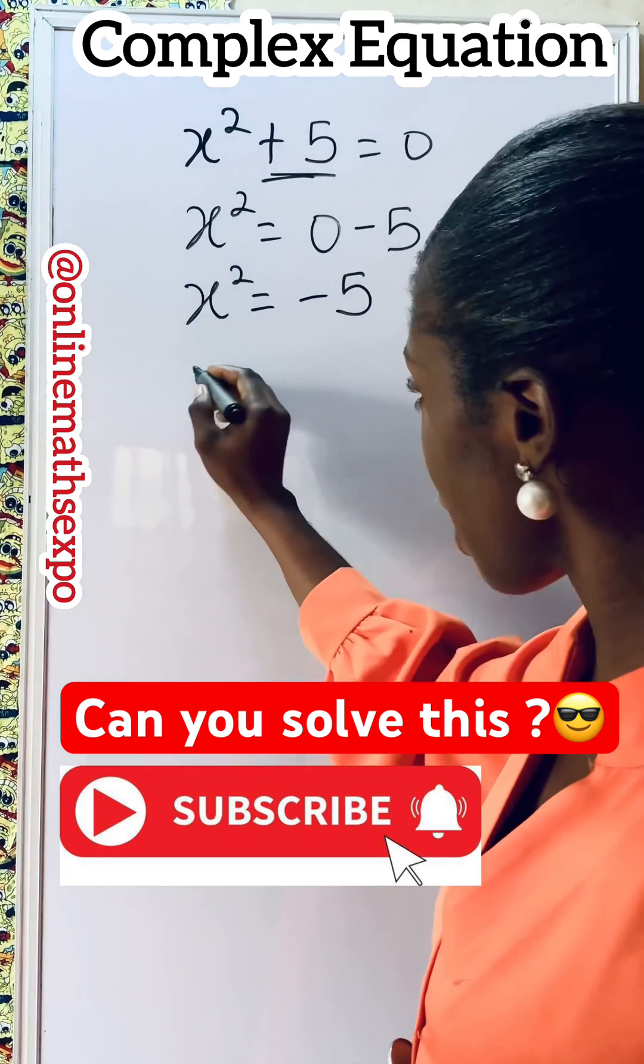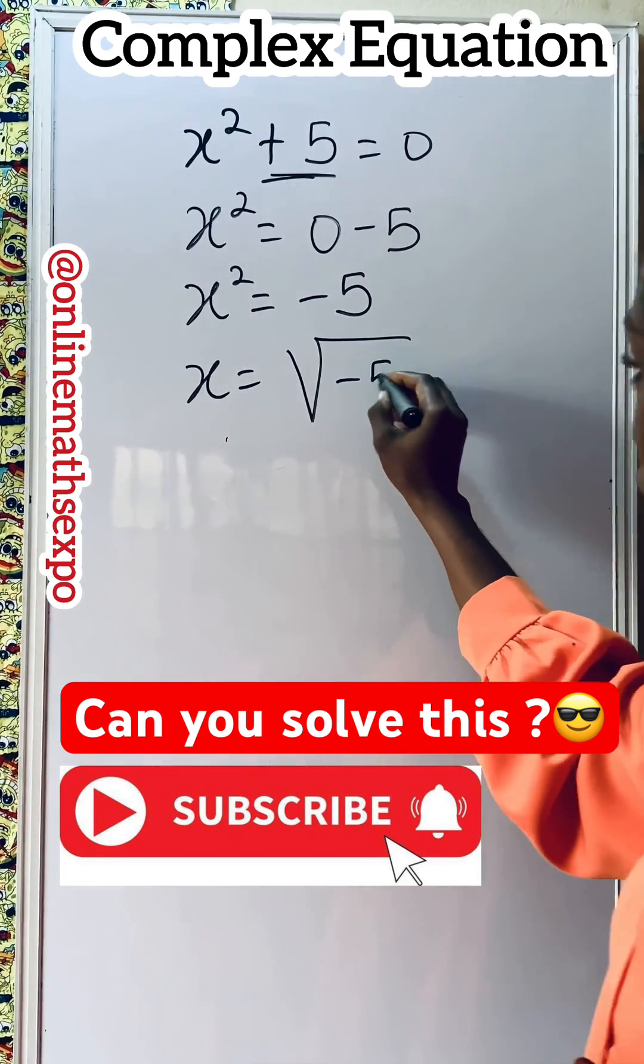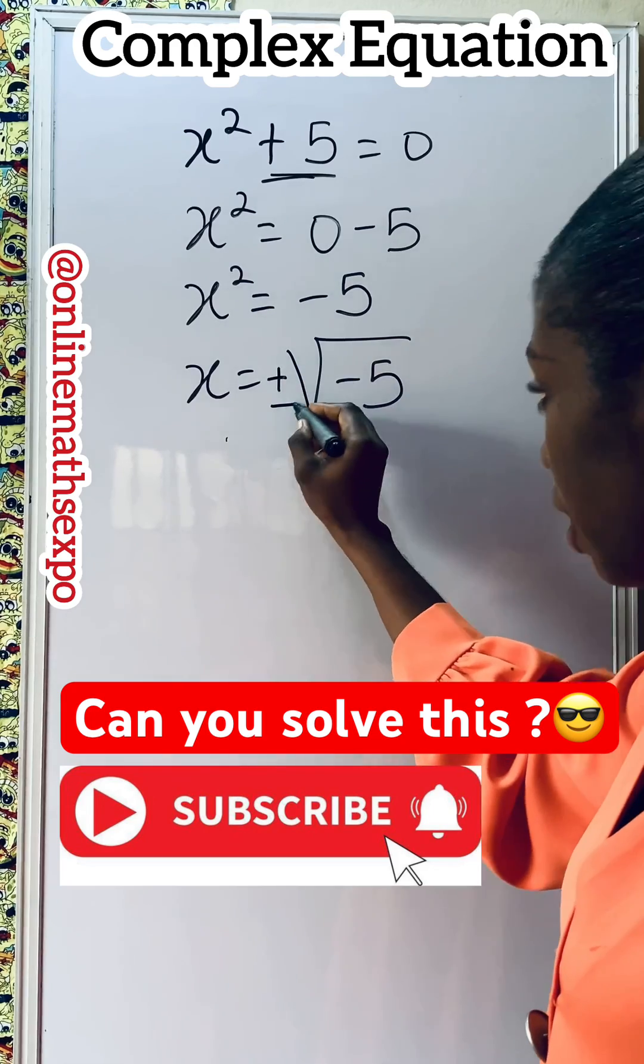To get x, you take the square root. So we have square root of negative 5, both the positive and negative value.